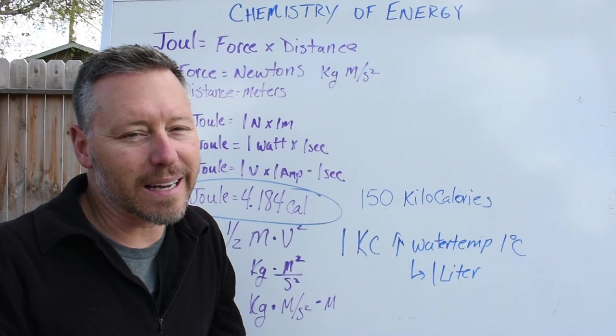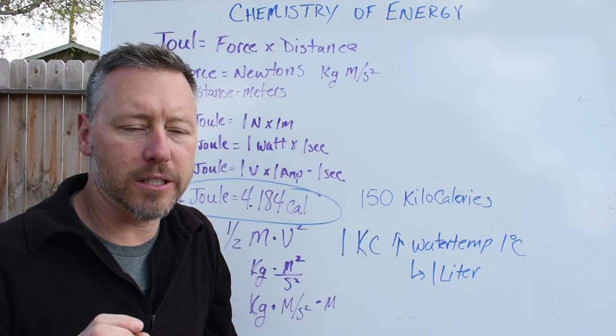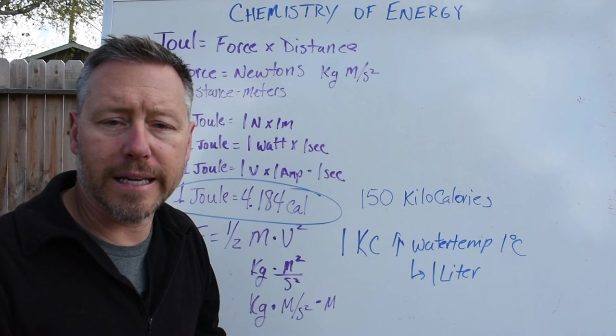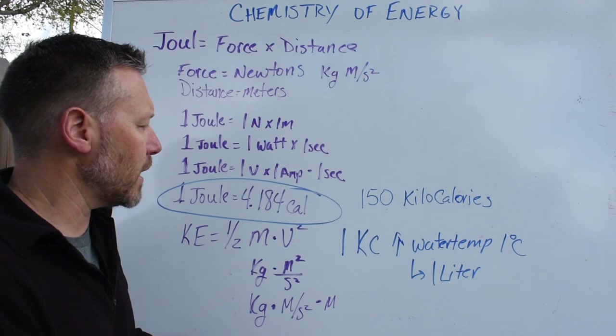A joule is really not that much energy, right? So we should be seeing it's a pretty small amount of energy. Now, we also relate joules to calories. And we also relate calories to our food. And our food is measured in kilocalories. So 1000 calories equals one kilocalorie.